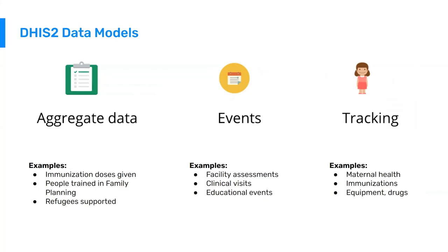Aggregate data is coming in routinely. These are examples of facility monthly reporting forms. They give us not terribly granular data, meaning that we're not able to see individual patients, but we're able to see aggregation of patient counts routinely — month after month, maybe week after week, continuously.